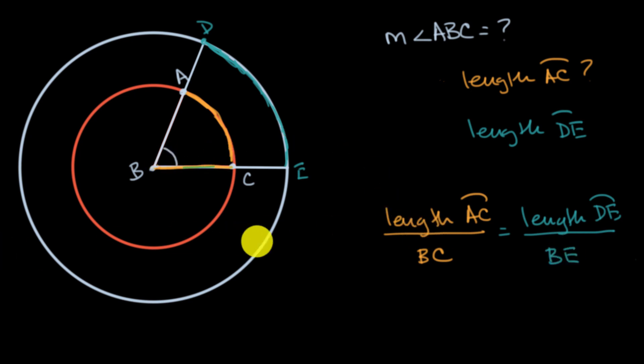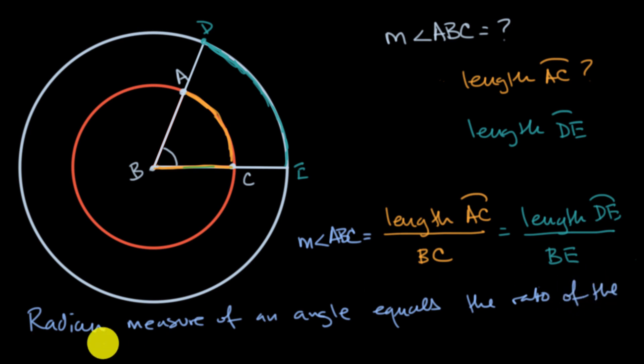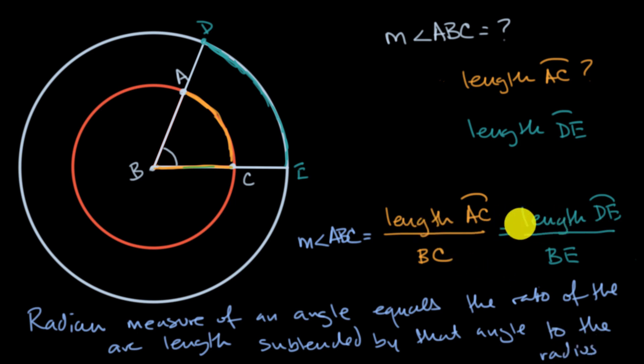So maybe this is a good measure for an angle. And it is indeed a measure that we use in geometry and trigonometry and throughout mathematics. And we call it the radian measure of an angle. And it equals the ratio of the arc length subtended by that angle to the radius. We just saw that in both of these situations.